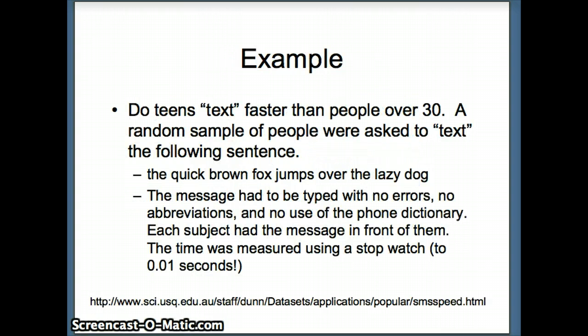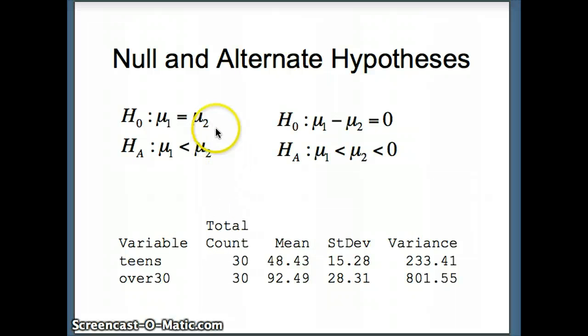One more example. The question here says: do teens text faster than people over 30? A random sample of people were asked to text the following sentence: the quick brown fox jumps over the lazy dog. The message had to be typed with no errors, no abbreviations, and no use of the phone dictionary. Each subject had the message in front of them. The time was measured using a stopwatch to 0.01 seconds. We have H0 mu1 equals mu2 versus HA mu1 is less than mu2 because we're saying the teens will have a lower average time to text than will the adults. Subtracting mu2 from both sides, mu1 minus mu2 equals 0 versus mu1 minus mu2 is less than 0.